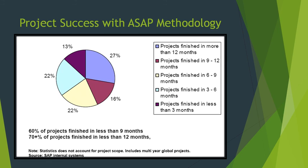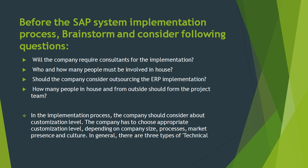A very important point is project success with ASAP methodology. The statistics show that 60% of projects finish in less than 9 months, and 70-plus percent of projects finish in less than 12 months — making it a really good methodology to implement SAP projects. Before starting an SAP implementation project you need to brainstorm certain things: will the company require consultants for the implementation, who and how many people must be involved in-house, should the company consider outsourcing the ERP implementation, and how many people in-house and from outside should form the project team.